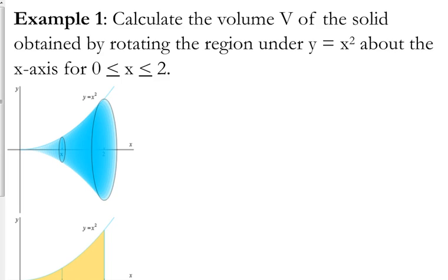Let's move to example one: calculating the volume of the solid obtained by rotating the region under y equals x squared about the x-axis between 0 and 2. So every single time, our setup is going to be this: volume equals pi times the integral from a to b of the radius squared.